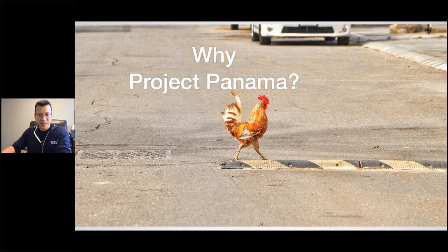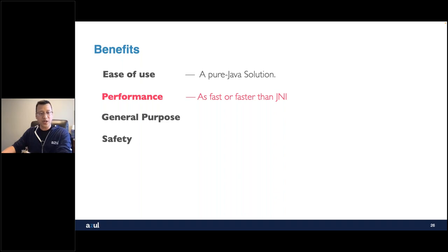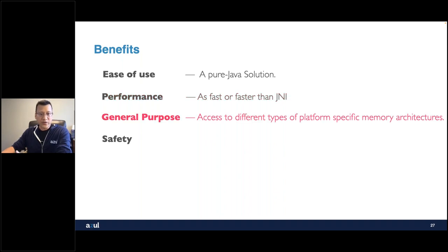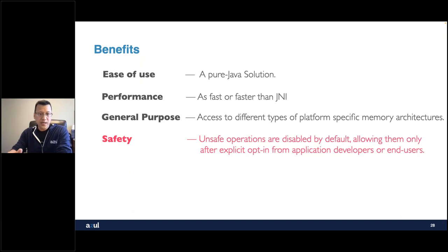So why Project Panama? There are really great benefits. First, ease of use — it's pure Java, you don't have to write any JNI code. Second, performance — it's as fast or faster than JNI because you avoid the indirection. Third, it's general purpose: it handles different memory architectures like 32-bit or 64-bit, big-endian or little-endian. And fourth, safety — a lot of unsafe operations are disabled by default, and I'll show you the switch to enable them later.